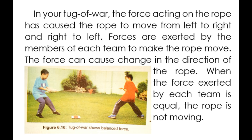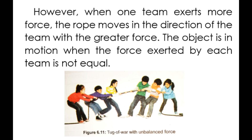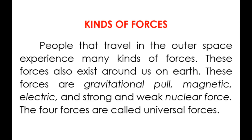In a tug of war, the force acting on the rope causes it to move left or right. Forces are exerted by members of each team to move the rope. When the force exerted by each team is equal, the rope does not move. However, when one team exerts more force, the rope moves in the direction of the team with the greater force. An object is in motion when the forces acting on it are not equal.